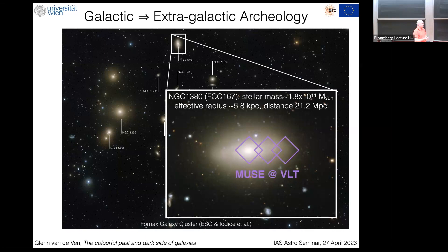This particular galaxy will come back several times — it has been a kind of pilot galaxy for us. It's a lenticular or early-type galaxy with a stellar mass of about 1.8 × 10¹¹ solar masses. It's quite extended with a half-light radius of 5.8 kiloparsecs, and it sits at a distance of 21.2 megaparsecs, placing it in the Fornax cluster.